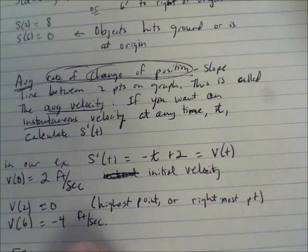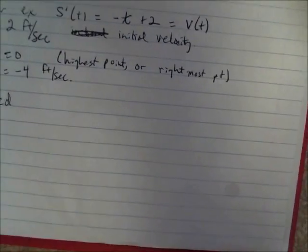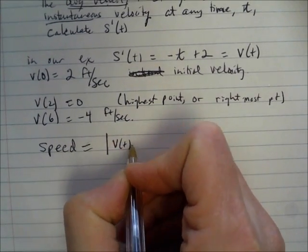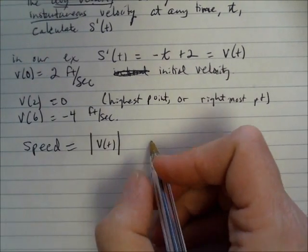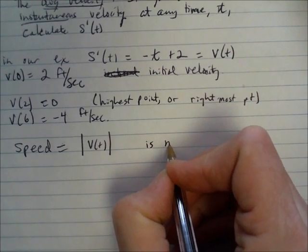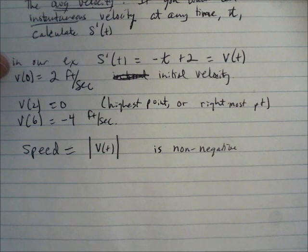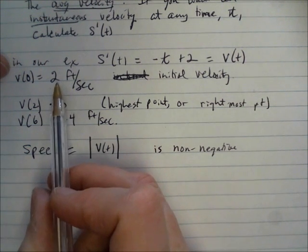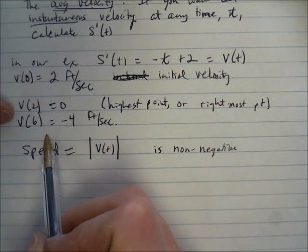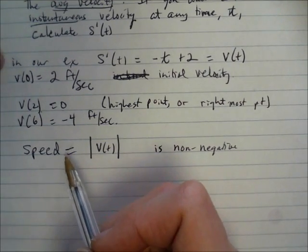Speed is another quantity you'll need to calculate. Speed is equal to the absolute value of the velocity — speed is always non-negative. So the speed at 0 seconds was 2 feet per second, the speed at 2 seconds was 0, and the speed at 6 seconds was 4 feet per second, because you take the absolute value of the velocity to get the speed.